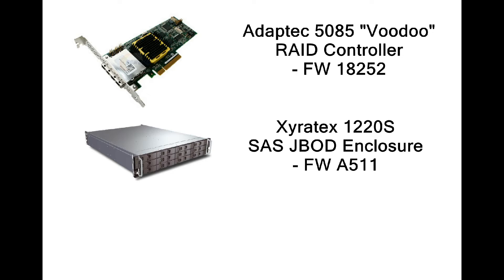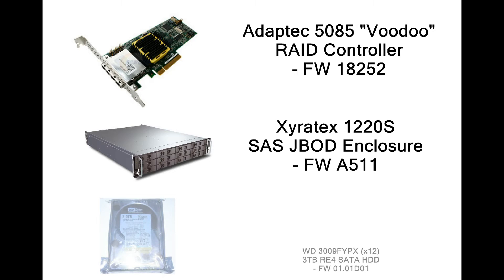Connectivity into the chassis is SAS, but the drive bays can be occupied by either SAS hard drives or SATA hard drives. Occupying the 12 bays of the enclosure are Western Digital 3 terabyte drives, featuring a total raw capacity of 36 terabytes.